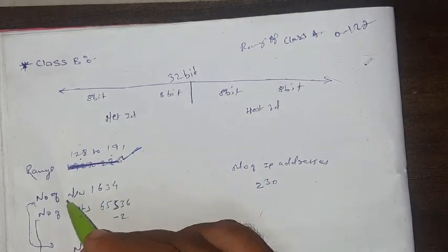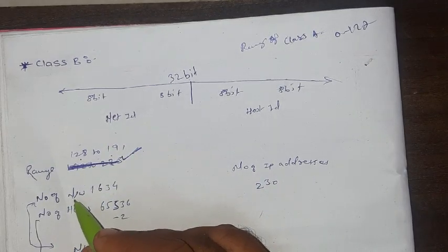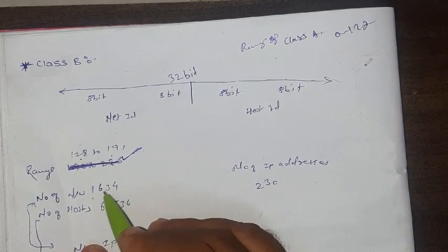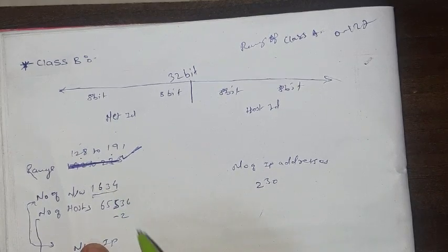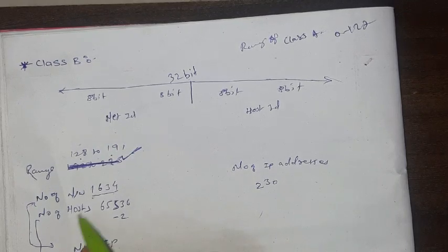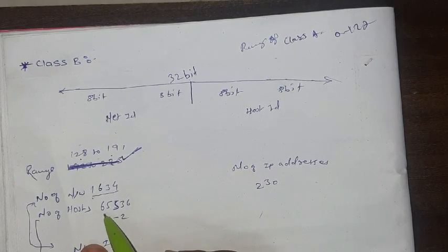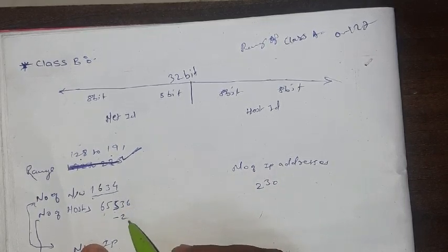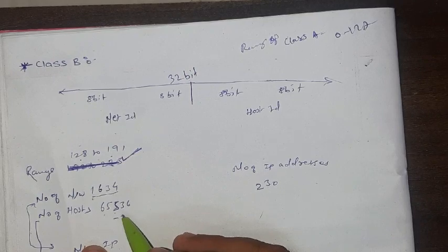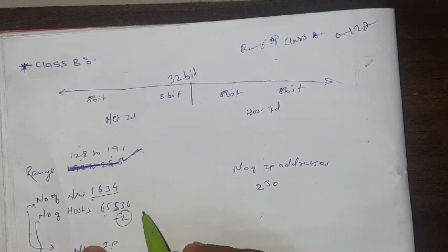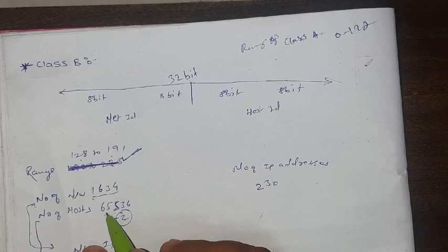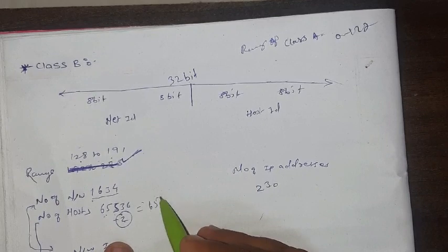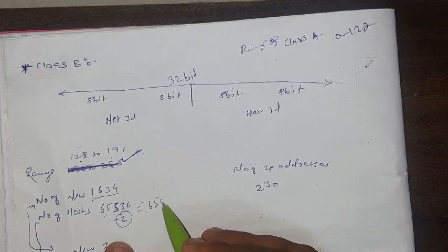Now next, the number of networks in Class B, these are 16384, and the number of hosts are near about 65536, not exactly 36. Why? Because of we are not able to use two IP addresses for a particular host. That's why 65536 minus 2 which is equals to 65534.